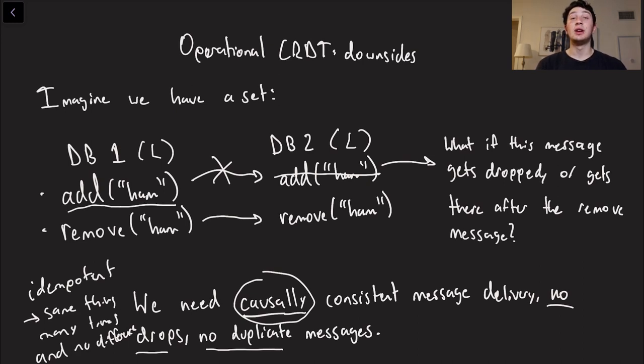If I send the message add ham five times, we're now going to add five quantities worth of ham. So again, this is not going to work for us. We need to make sure that in our message delivery, again, we have no drops and we have no duplicates. So it's very important for operational CRDTs.